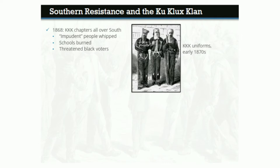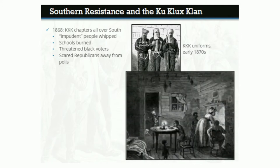In this way, the Klan served as a paramilitary tool of the Democratic Party, attempting to scare Republicans away from the polls. Victims often received visits in the middle of the night by large groups of Klansmen, masked and dressed in elaborate costumes. Then they would be beaten, their homes would be burned down, or they would be lynched in cold blood.